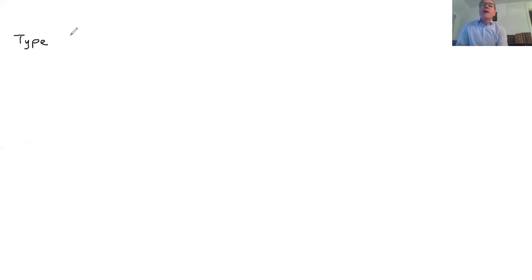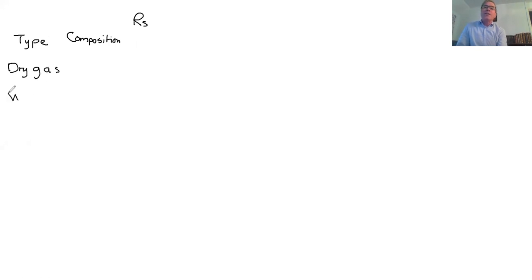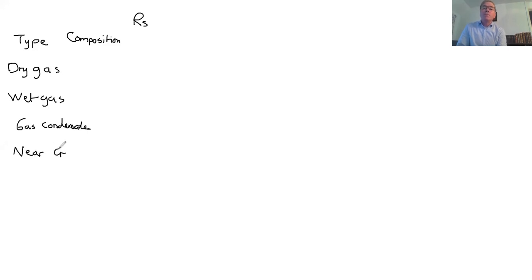So we're going to go to the whiteboard and complete a table. I'm going to talk about the type of hydrocarbon, the composition, and then define what I call Rs. The types of field we've already talked about: we have a dry gas, a wet gas, a gas condensate, a near critical oil, a black oil, and a heavy oil.